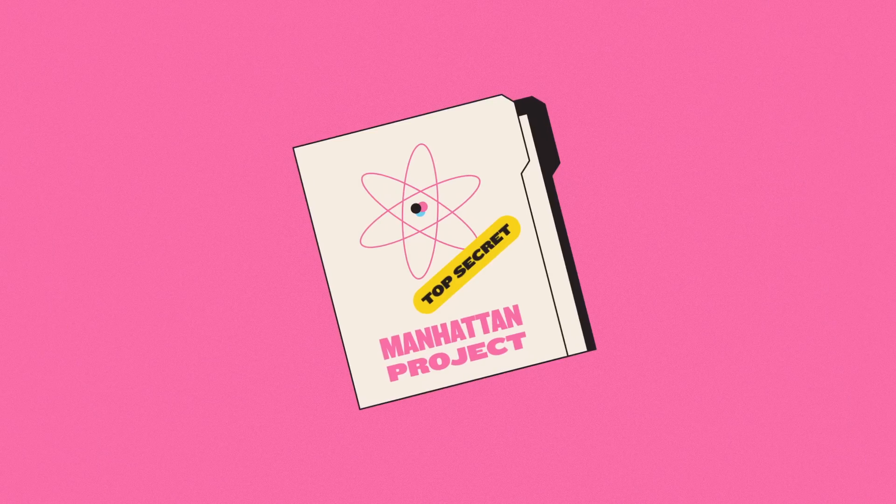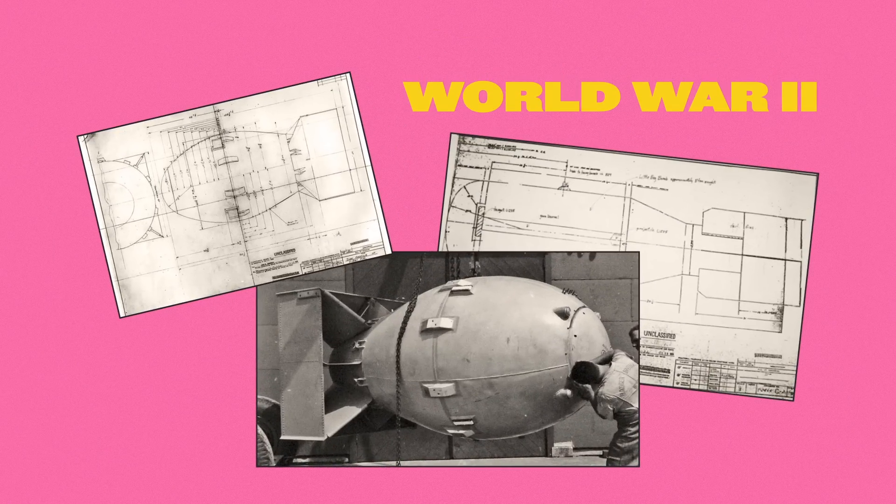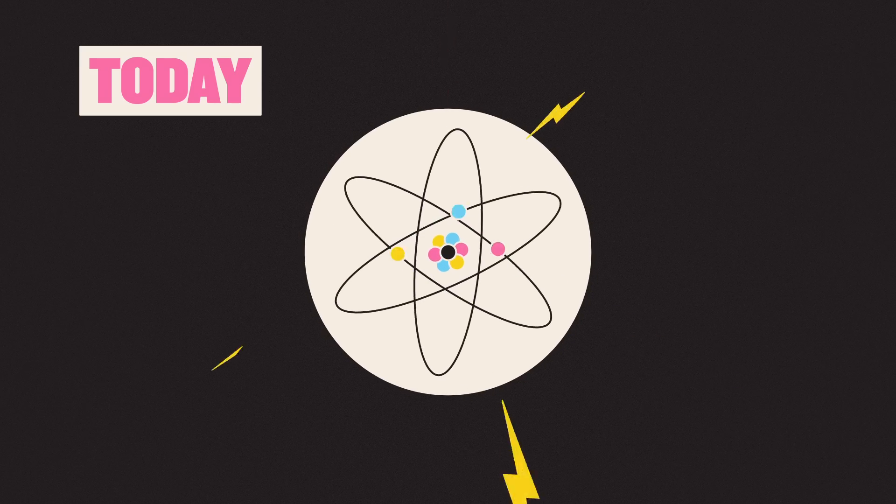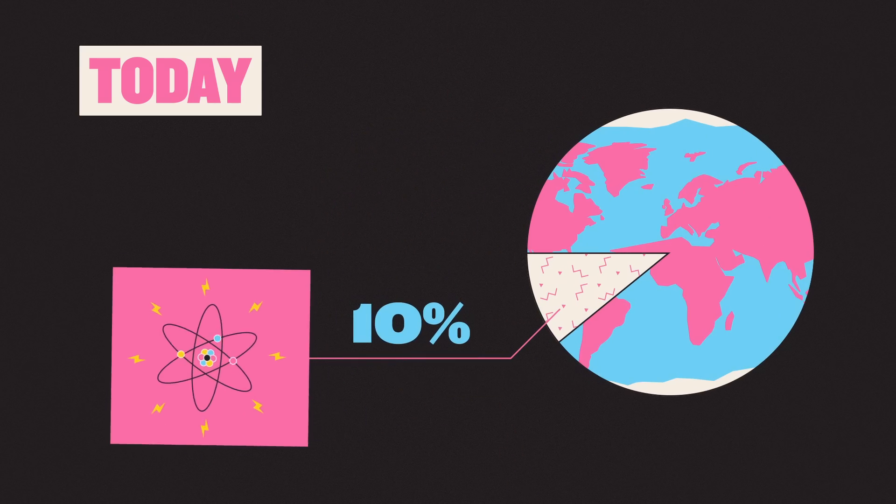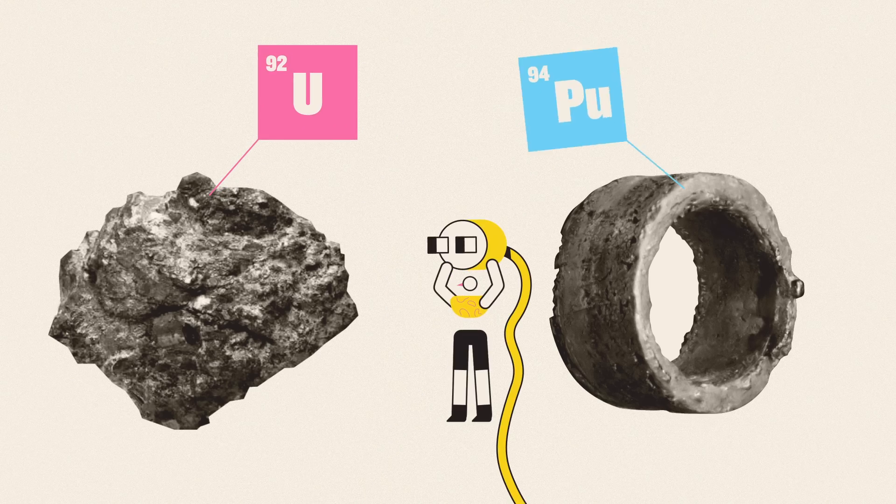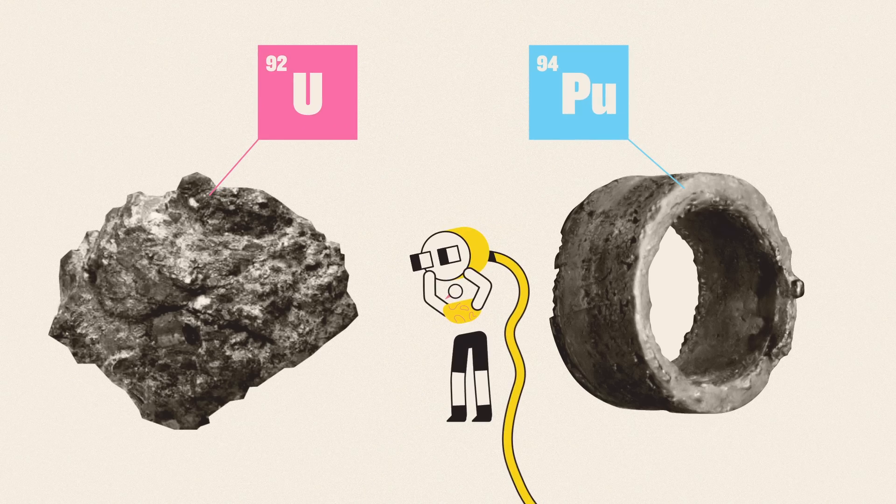Although it was first developed to build the bombs that ended World War II, today, nuclear power is mostly used to generate electricity, making up about 10% of the world's output. But the raw materials, like uranium and plutonium, aren't batteries you can just plug into.